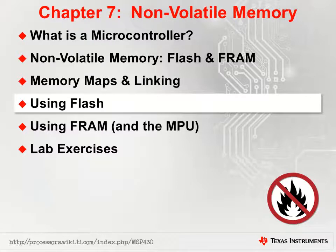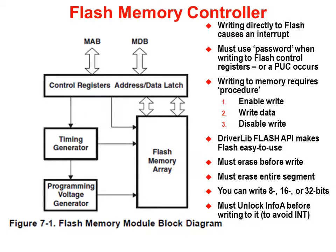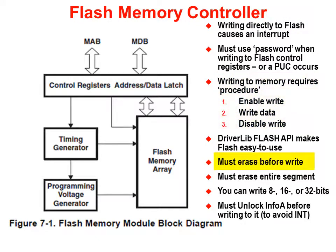Now that we've completed a brief overview of memory maps and linking, let's turn our attention to how we can use flash in our programs. MSP430 devices have a flash controller that handles all of the hardware requirements for writing to flash. There are a few things to keep in mind. First, you can't write directly to flash memory addresses — doing so will cause an interrupt or a reset. Instead, you need to follow a procedure for writing to flash. Oddly enough, writing to flash only writes zeros — before you can write, you actually need to erase the flash, which writes the ones. Finally, you have to erase a whole flash segment at one time, even if all you want to do is write a byte.